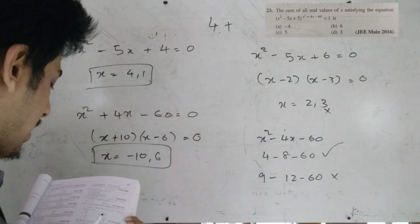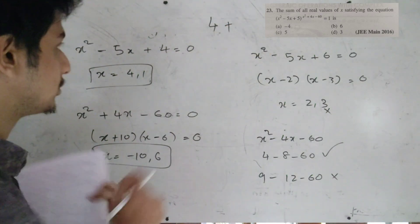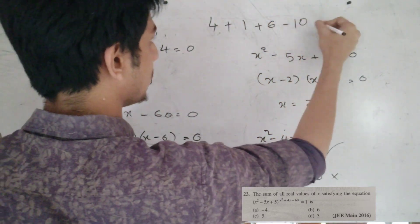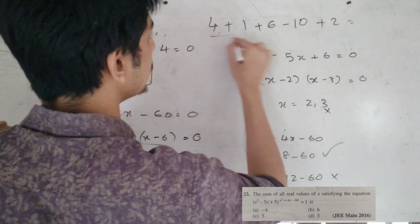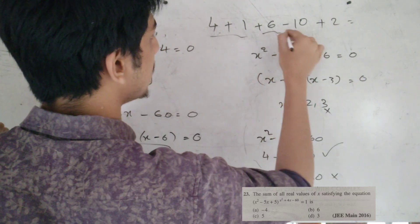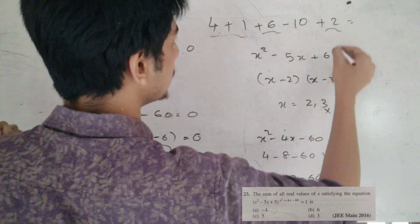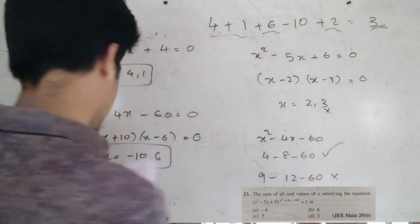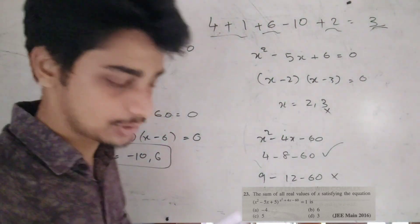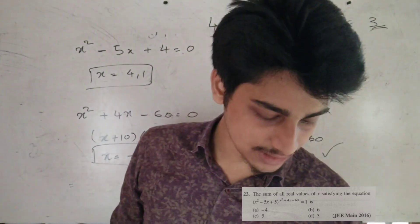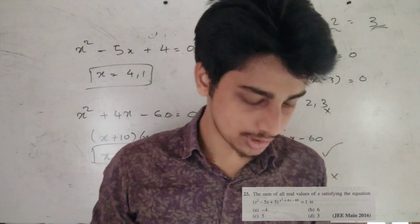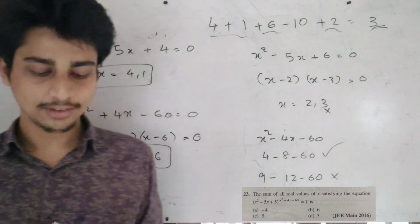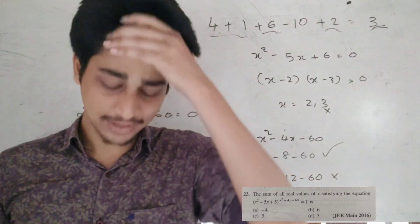Sum of all real values: 4 + 1 + 6 + (−10) + 2 = 3. The answer is option B. The homework answer is in the description — check the comments for the solution.